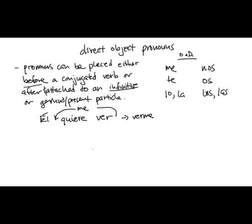El quiere verme. Let's write that out so it's clear. El quiere verme. Okay. He wants to see me. Or you could put that me before the conjugated verb. Okay.